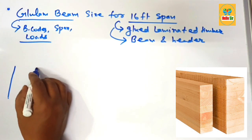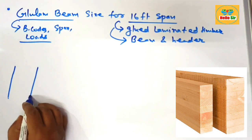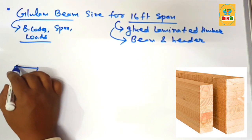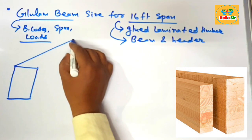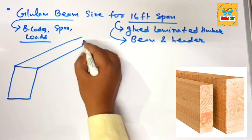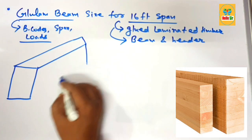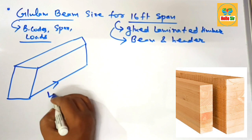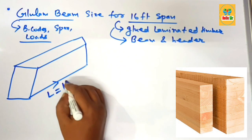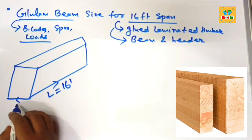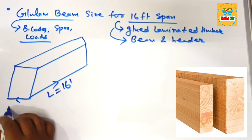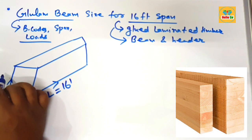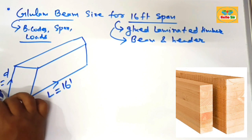First we describe the different dimensions of a glulam beam — you need to understand the depth section and width section of the beam. This is the rough diagram: this is the span length, which is given as 16 foot; this is the width section of the beam to be calculated; and this is the depth section of the beam.